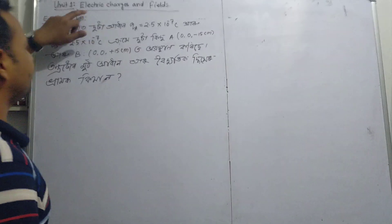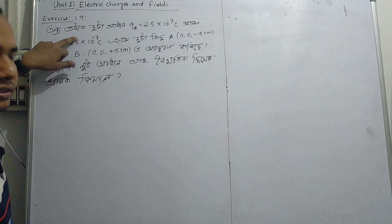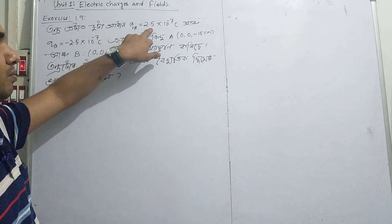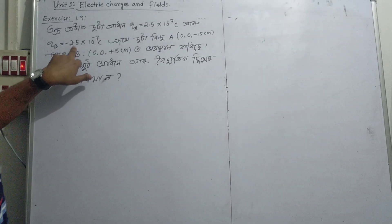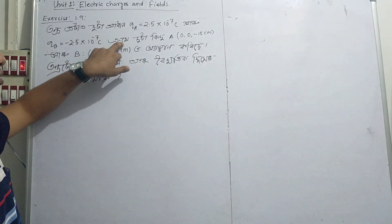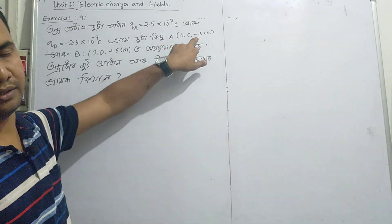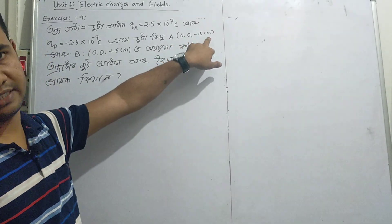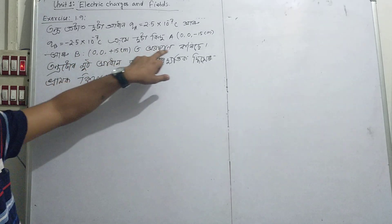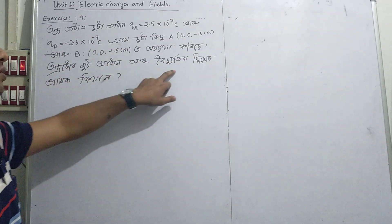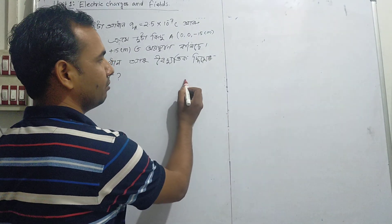We have a question on electric charge and filter problem 1.9. QA is equal to 2.5 into 10 to the power minus 7 Coulomb, and QB is equal to 2.5 into 10 to the power minus 7 Coulomb. Point A is at (0, 0, -15 cm) and point B is at (0, 0, +15 cm).